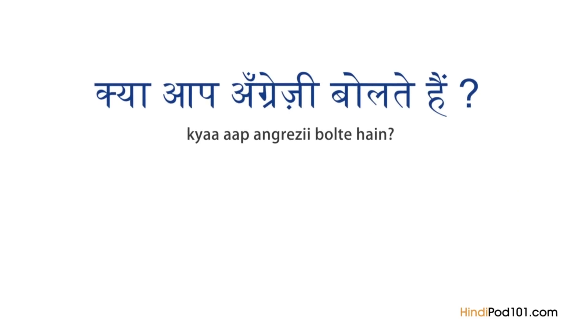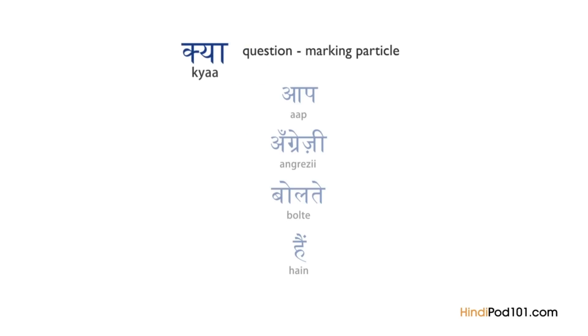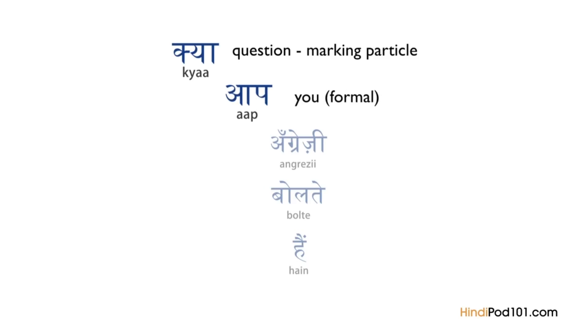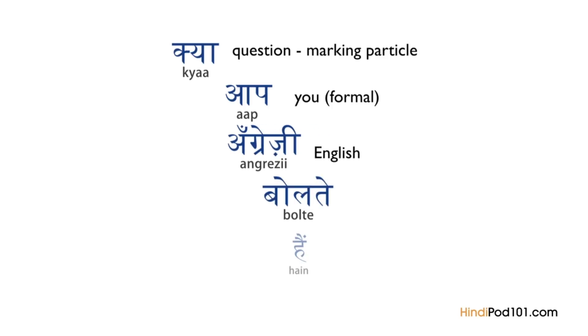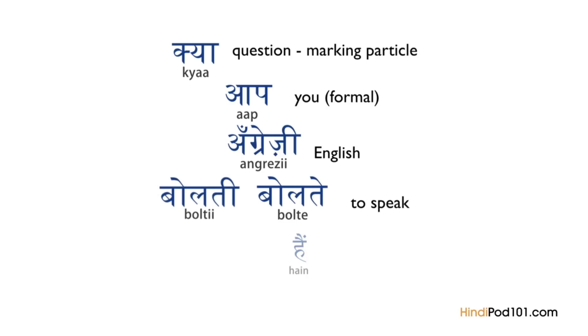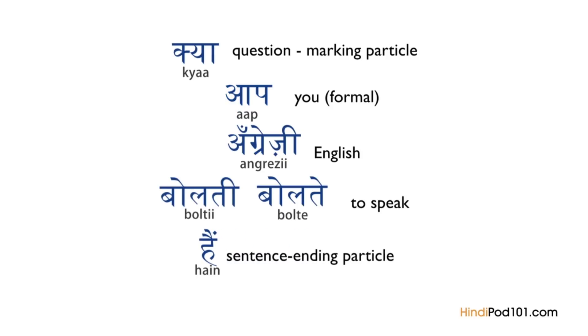To ask a woman if she speaks English, you would say: kya aap angrezi bolti hain? Let's break down the sentence. Kya is the question marker which comes at the beginning of the sentence. Aap means you — the respectful word used in formal situations. Angrezi means English. Bolte is used when the subject is masculine; bolti is used when the subject is feminine. Hain is the sentence ending particle used with the formal you.